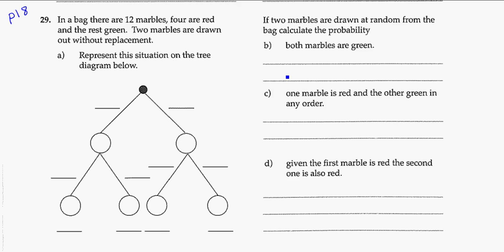Alright, so another hint for you in your workbook, page 18, question 29. In a bag there are twelve marbles. Four are red and the rest are green. Two marbles are drawn without replacement. So without replacement means we take a marble out and you don't put it back.